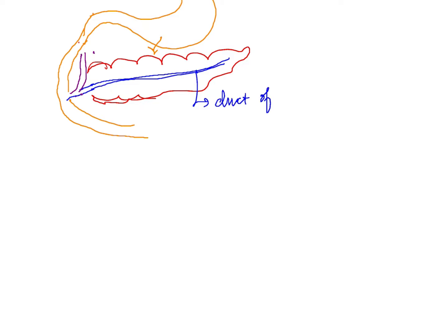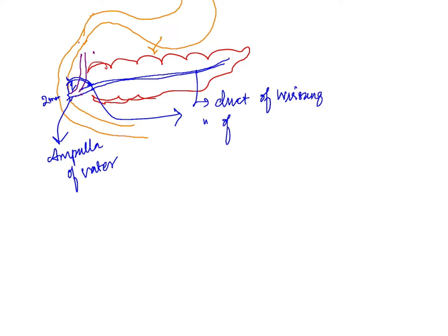There is also an accessory duct which splits just before the bile duct joining and opens into the duodenum just 2 cm above the ampulla of Vater. The ampulla of Vater is the opening of the combined bile and pancreatic duct into the epithelium of the small intestine — the duodenum. The main duct is called the duct of Wirsung, and this accessory duct is called the duct of Santorini.